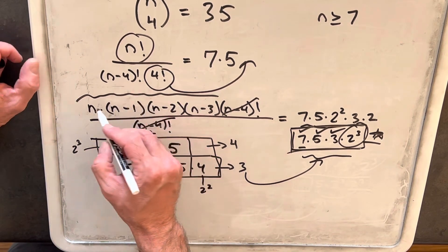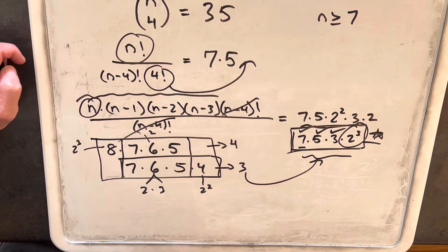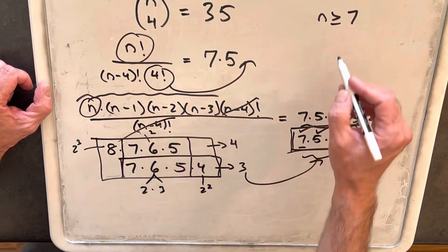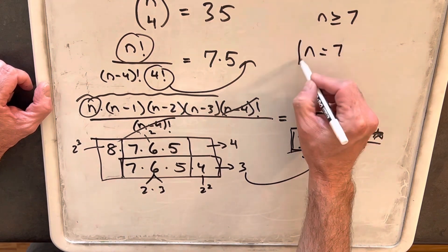But the question, what we need is, we actually need n. So we want the largest value in this four consecutive integer. So the largest value, we're going to say n equals 7.